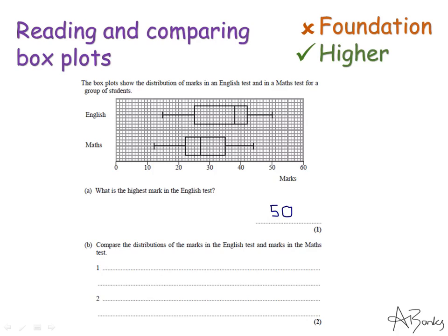The second part of this question says compare the distributions of the marks in the English test and the marks in the maths test and they're asking for two comments. Now you need to know what the examiner is looking for here and they're looking for you to make the first comment about the medians and the second comment about either the ranges or the interquartile ranges. So you can't just comment and say what the medians are. We need to write what these medians tell us.